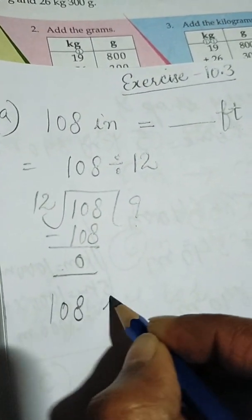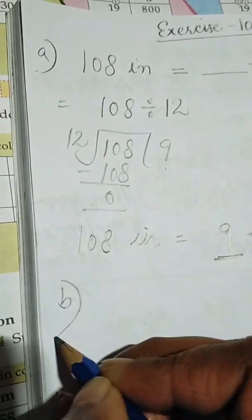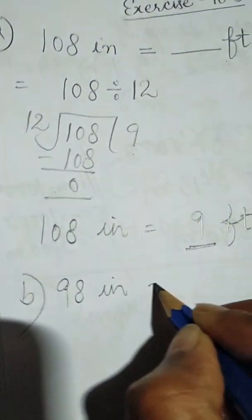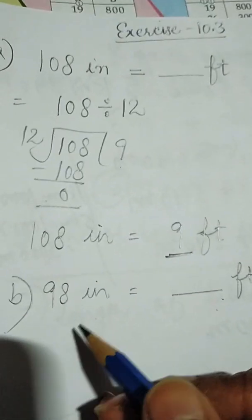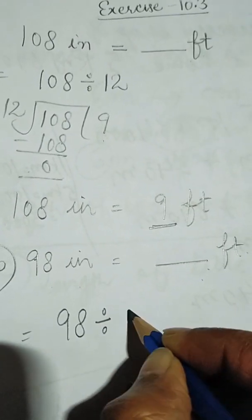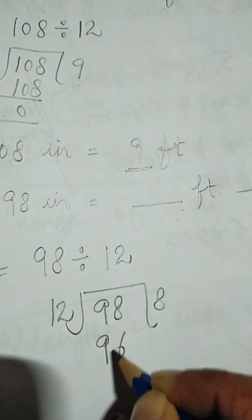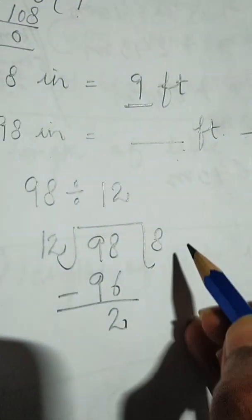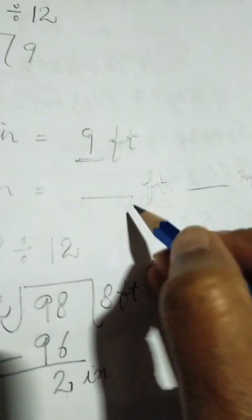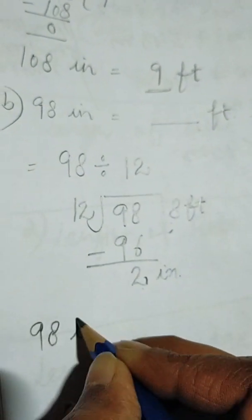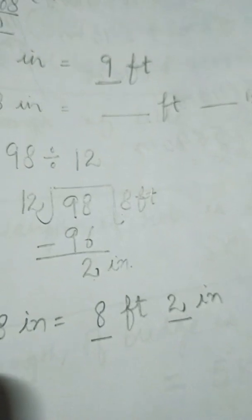Now part (b): 98 inches needs to be converted into feet and inches. We divide 98 by 12. 12 times 8 is 96, with remainder 2. So the quotient is the feet and the remainder stays as inches. Therefore, 98 inches is equal to 8 feet and 2 inches.